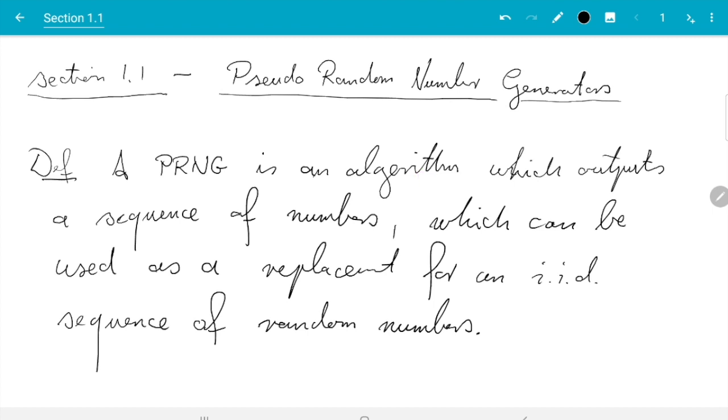Then the rest I think is clear: the output is a sequence of numbers, that's what we want, and these numbers can be used as a replacement for IID random numbers. We will later in section 1.1.2 talk about what it means that we can use it as a replacement.